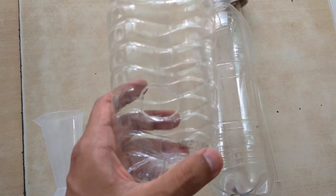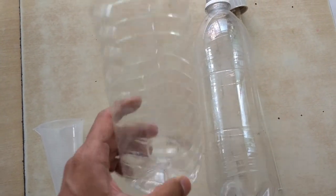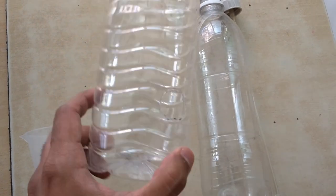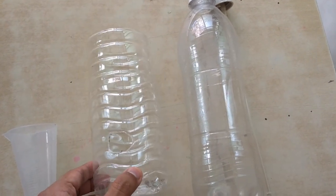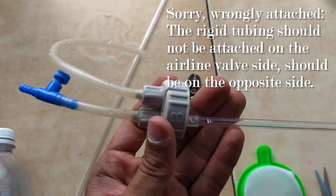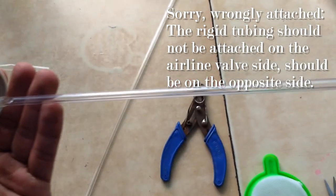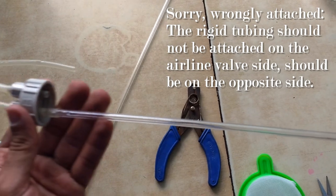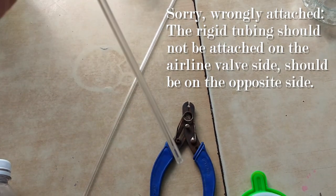You need this half bottle cut with a big hole, I'll show you why. This bottle, and this is how you should attach the rigid airline tubing and the valve.